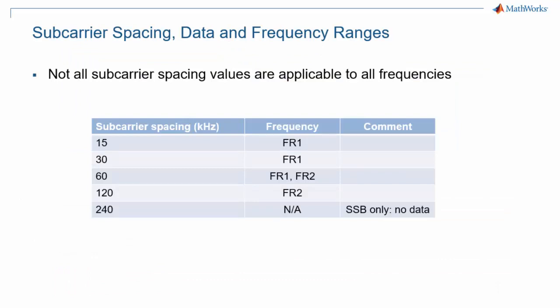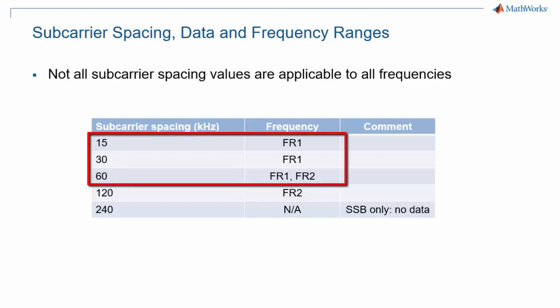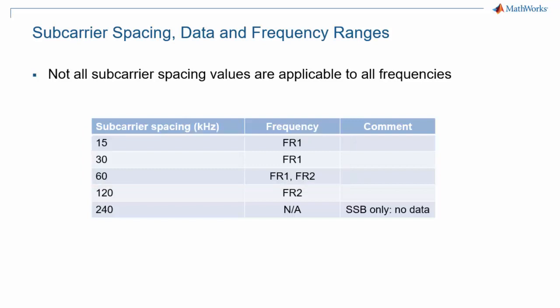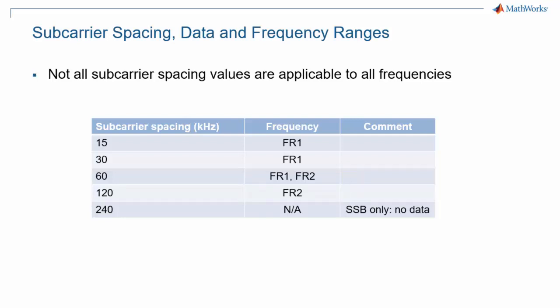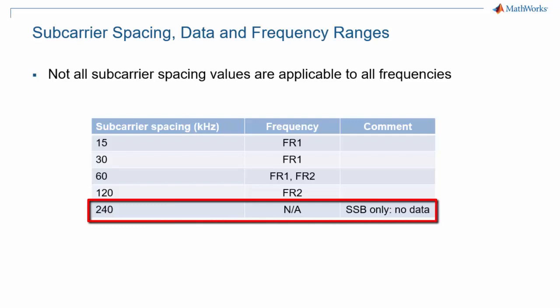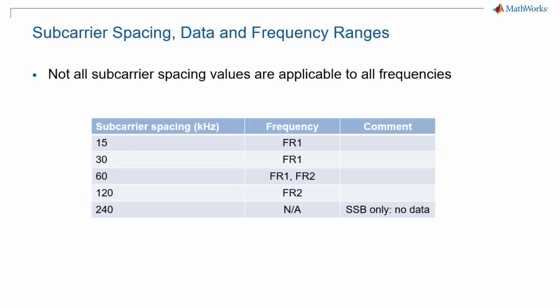There is an interdependency between some parameters. Here I want to introduce the dependency on the carrier frequency. Frequency range 1, or FR1, is for carrier frequencies below 6 GHz. In that range, only subcarrier spacings of 15, 30, or 60 kHz are available. For FR2, which corresponds to mmW frequencies, data transmission can only use 60 or 120 kHz subcarrier spacing. Note that 240 kHz spacing is reserved for non-data channels, namely the synchronization signal block, which is described in another episode of this 5G Explained series.